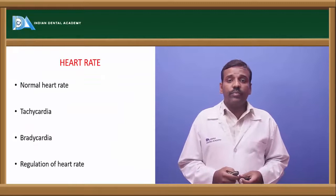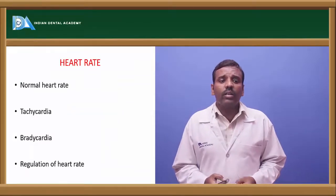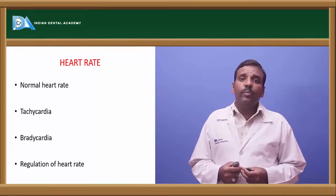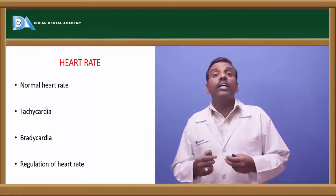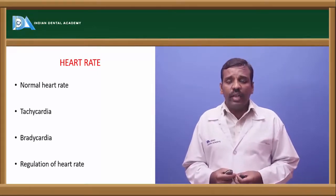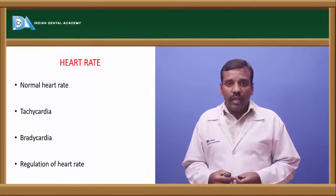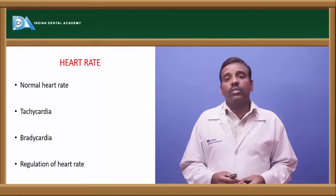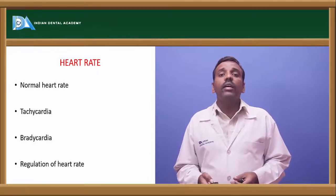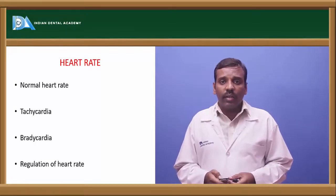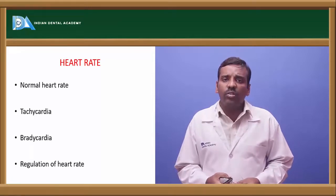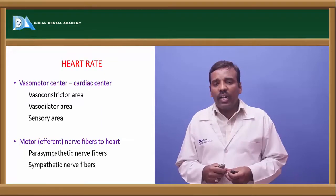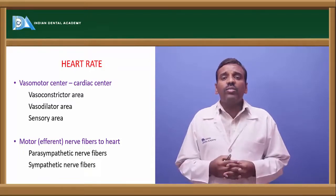Heart rate is the number of beats per minute, normally about 72 beats per minute. When heart rate is increased, it is called tachycardia. Regulation of heart rate is by two types: humoral and neural. The vagus nerve maintains neural regulation through the Bain-Bridge reflex and the Marey's reflex, acting via vasomotor cardiac centers.